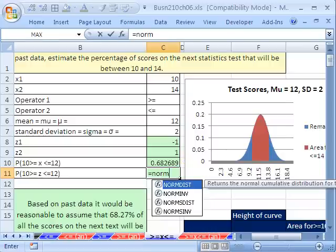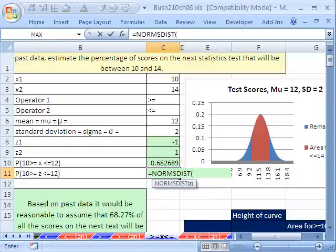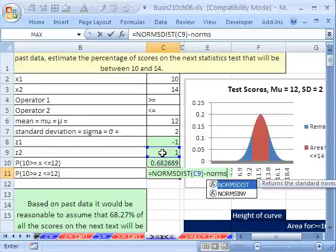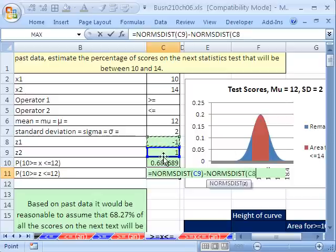But here's how to do that calculation with 2 NORM.S.DIST. The S always reminds us that we're doing z for standard. The S is for standard. So big z first, that's this one, minus NORM.S, the small one.